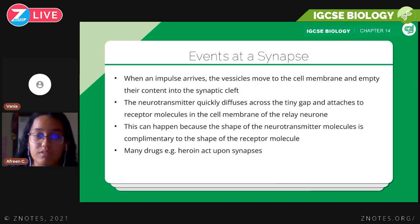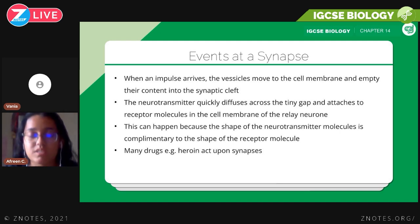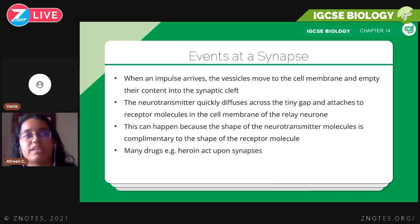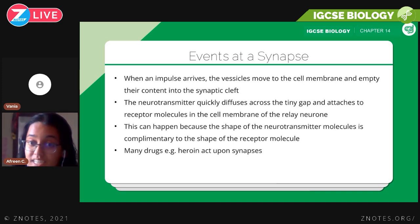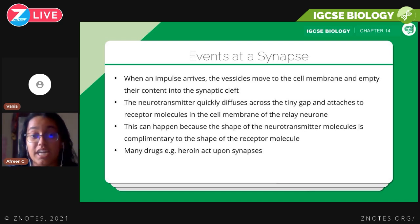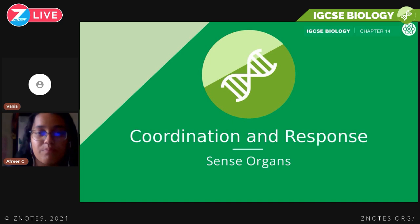You need to know how drugs can affect the function of the synapse. Drugs act upon synapses by preventing neurotransmitters from diffusing across the synapse, which can make you feel less pain. The main function of these neurotransmitters is for you to feel pain so that you can detect changes in environment. Some drugs like heroin can prevent that from happening.